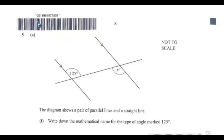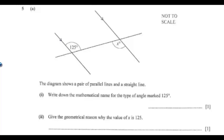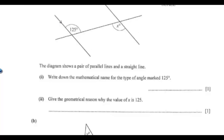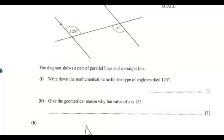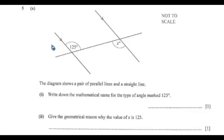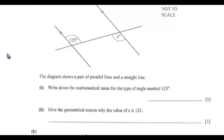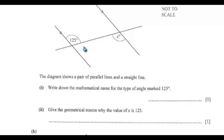Question 5a: the diagram shows a pair of parallel lines and a straight line. Write down the mathematical name of the type of angle marked 125 degrees. This is an obtuse angle. An angle greater than 90 degrees and less than 180 degrees is called an obtuse angle. That's the mathematical name.